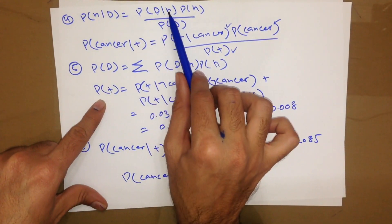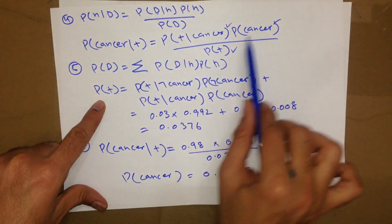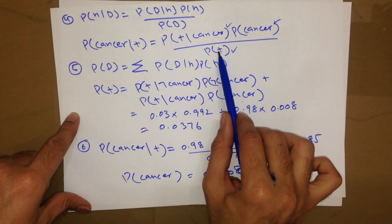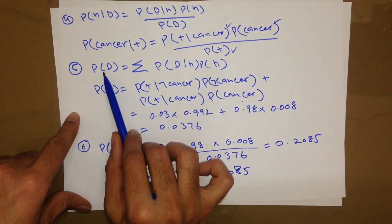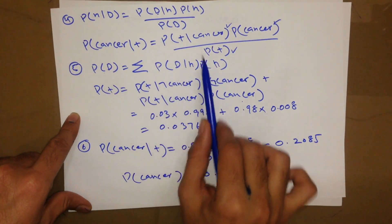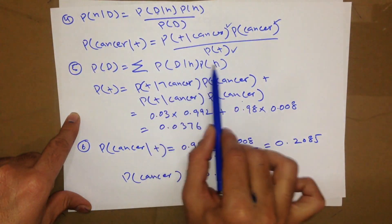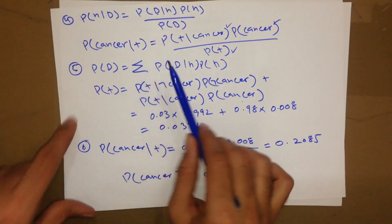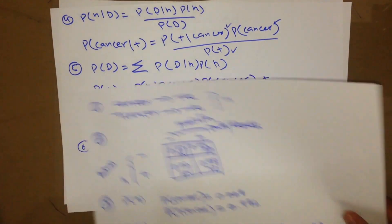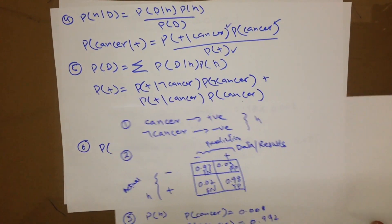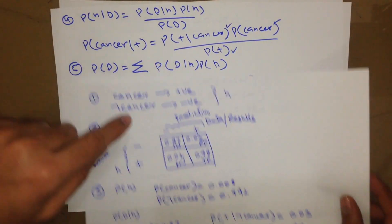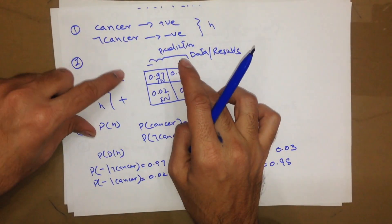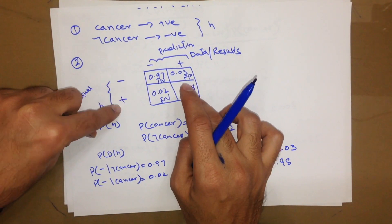We replace all the D's with positive and all the H's with cancer in the Bayesian formula, and then we need to find out P(D+). The formula for P(D) is P(D|H) times P(H) with a summation sign over all hypotheses. So if we have a positive data, we need to find out the total probability of positive data.